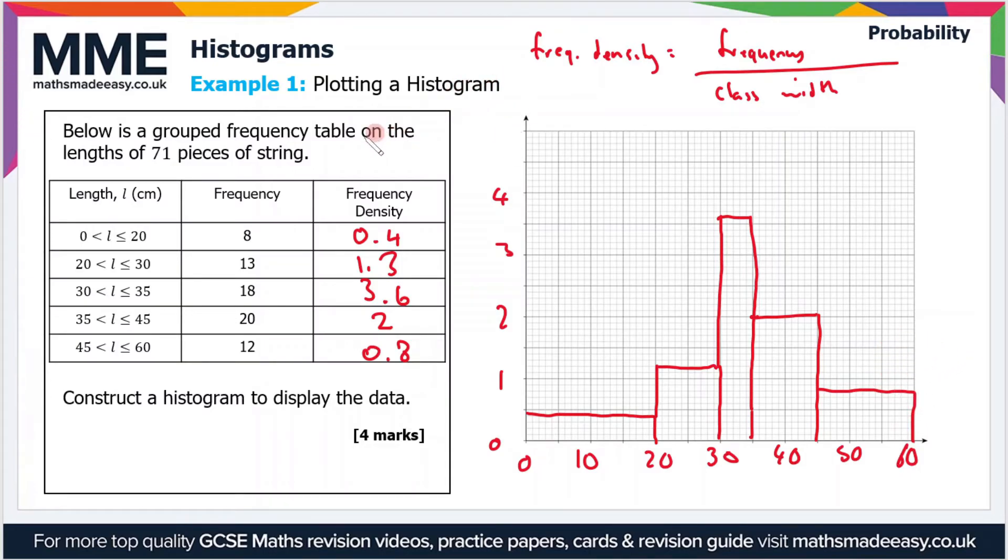You might be wondering why do we use frequency density. It's essentially just a way of measuring where the data is most clustered. The highest frequency density is 3.6, that's the tallest bar, because the length class is quite narrow.